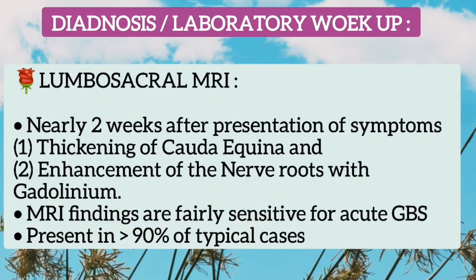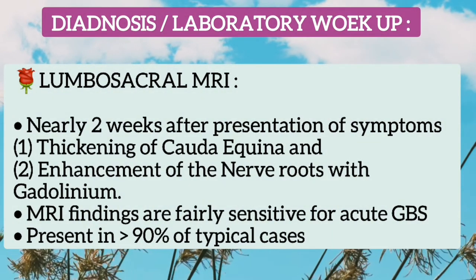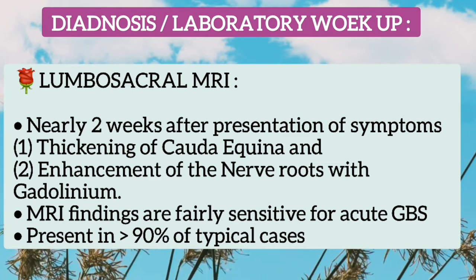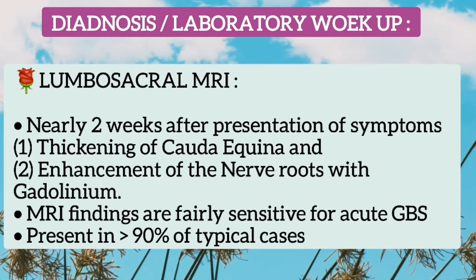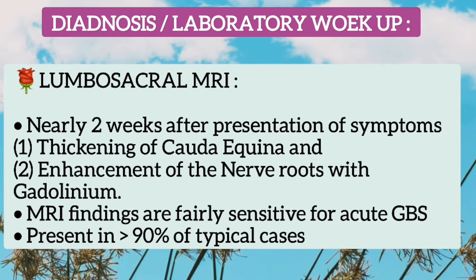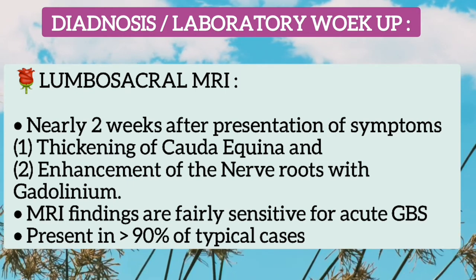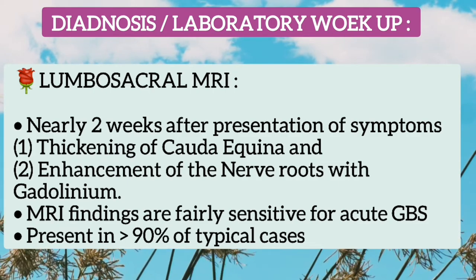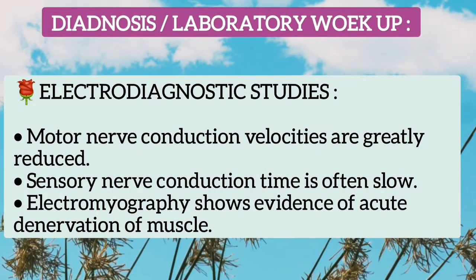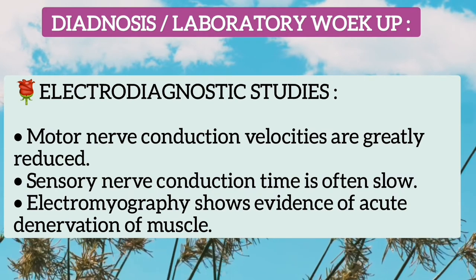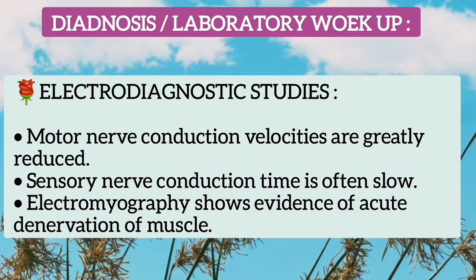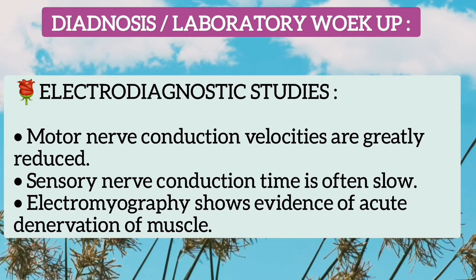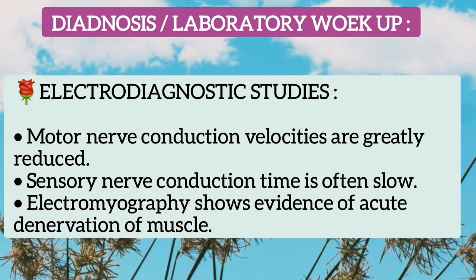The second important study is lumbosacral MRI. Nearly 2 weeks after presentation, there is thickening of the cauda equina and enhancement of nerve roots with gadolinium. MRI findings are fairly sensitive for acute GBS and are present in more than 90% of typical cases. Electrodiagnostic studies show that motor nerve conduction velocities are greatly reduced, sensory nerve conduction time is often slow, and electromyography shows evidence of acute denervation of muscles.